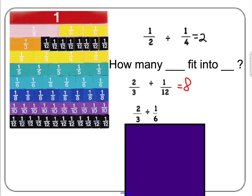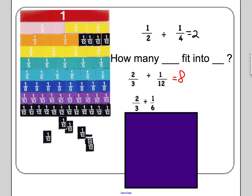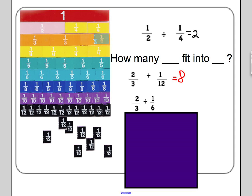Two-thirds divided by one-sixth means how many one-sixths fit into two-thirds. We replace the twelfths from before and now use one-sixths. How many one-sixths fit into two-thirds? One, two, three, four. The answer is four.